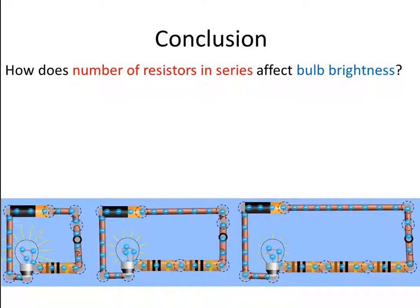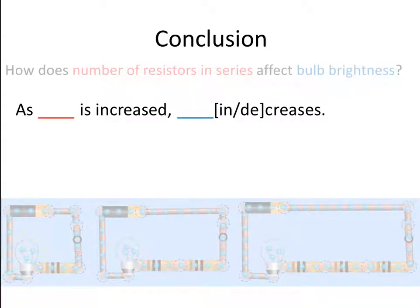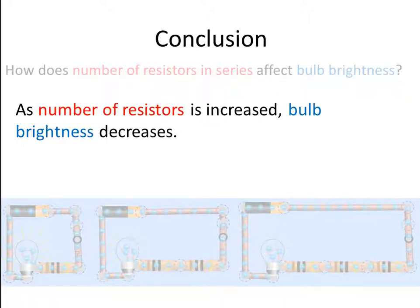So what is our conclusion? How do we answer the question: how does number of resistors in series affect bulb brightness? We give it in this format: as the independent variable is increased, the dependent variable increases or decreases. Complete this yourself before continuing. As the number of resistors is increased, bulb brightness decreases — and that is only true as long as we keep the same battery voltage and the same resistance of the resistors placed in series.